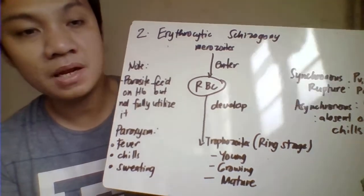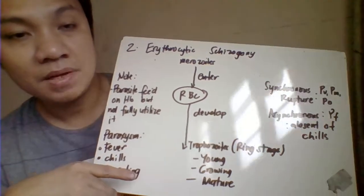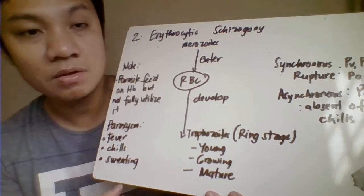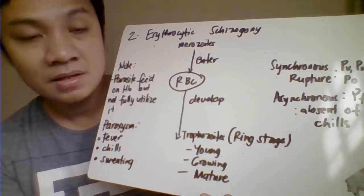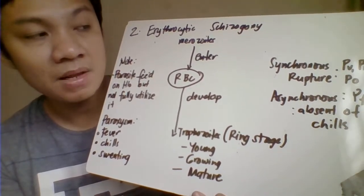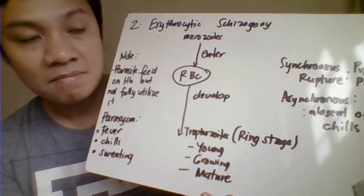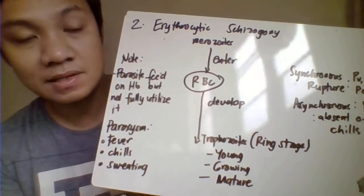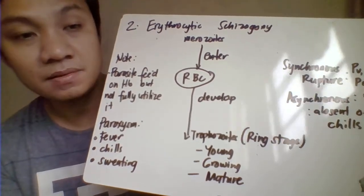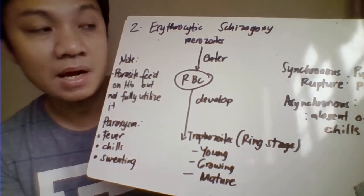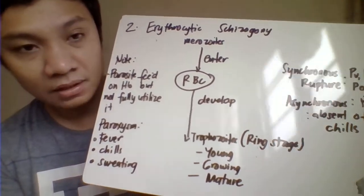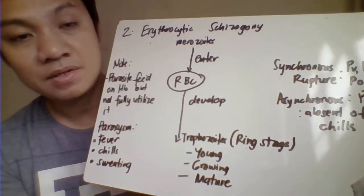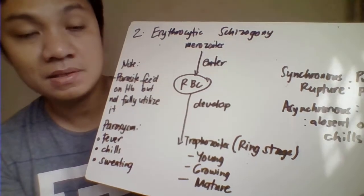Based on the rupture of the schizonts, Plasmodium is classified as either synchronous — where schizonts rupture at the same time — occurring in vivax, malariae, and ovale. In the case of Plasmodium falciparum, the rupture is asynchronous, meaning the red cells do not rupture at the same time, and the patient may also have absence of chills despite having fever.